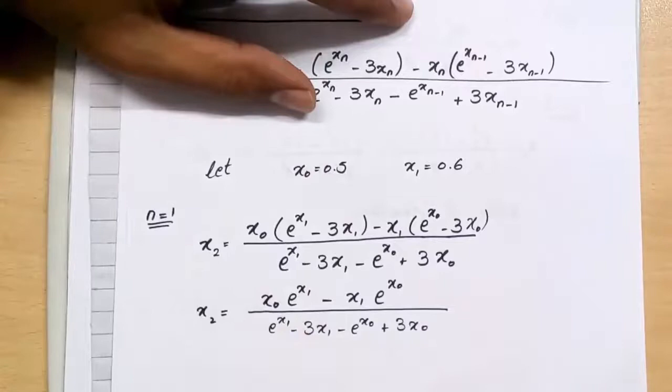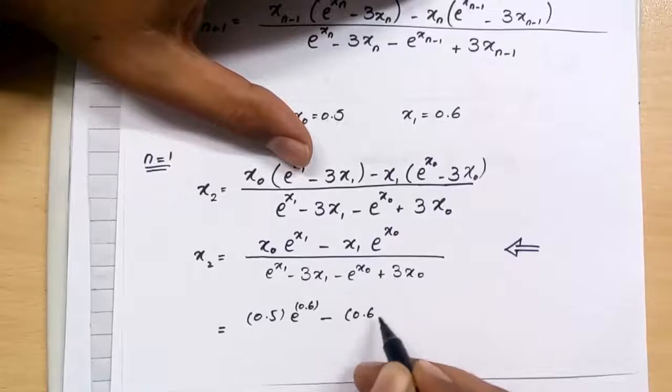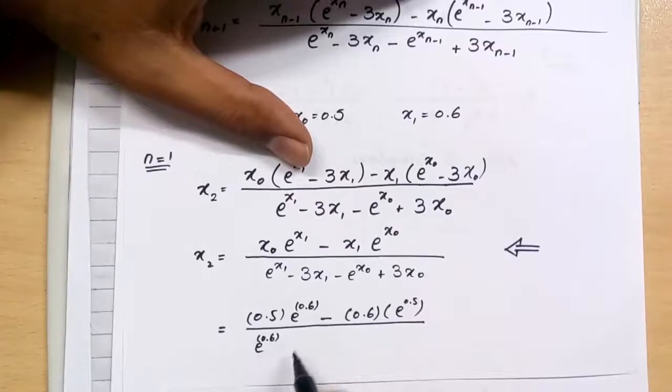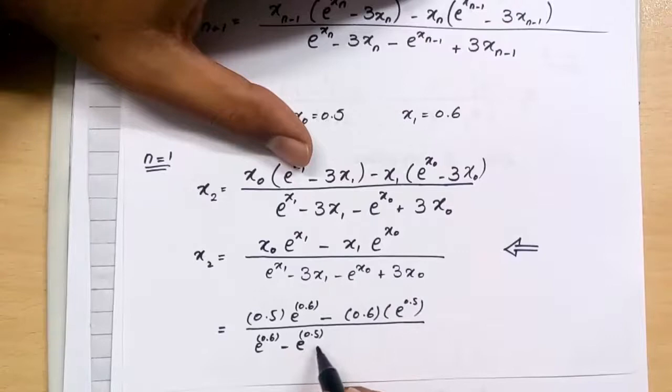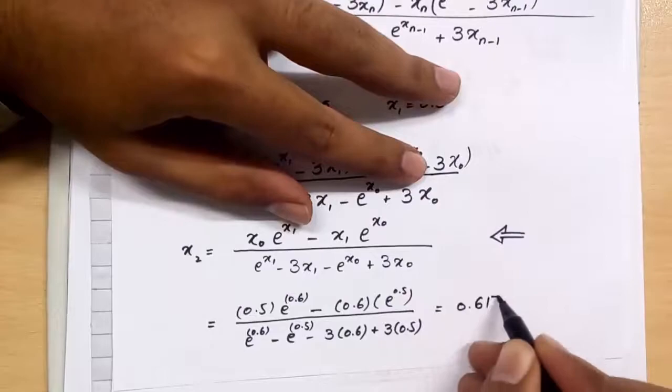By simplifying the relation, we have this. Solve it with x_0 and x_1, and we got the value of x_2.